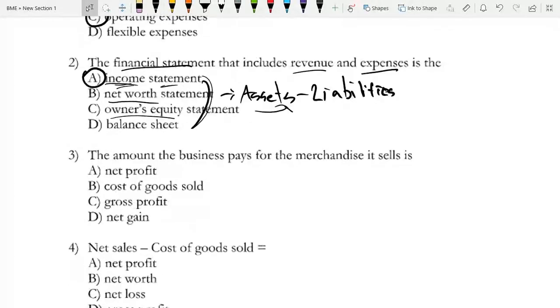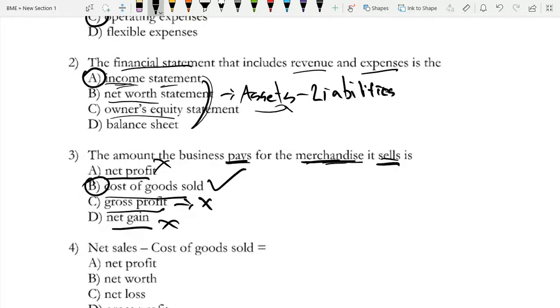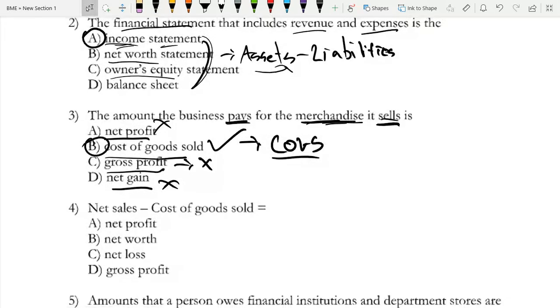Question three: the amount the business pays for the merchandise it sells. It's not net profit because profit is money you're making, not paying. Cost of goods sold sounds likely. It's not gross profit or net gain because you're paying money, not gaining. The answer is cost of goods sold, also referred to as COGS, C-O-G-S. You have to know this abbreviation - it will likely come up on your test.